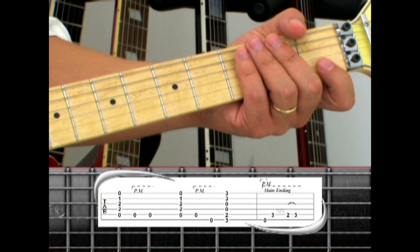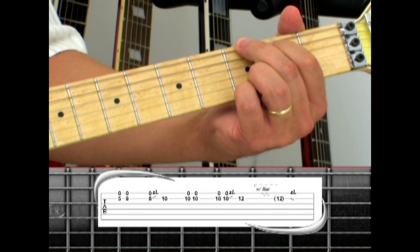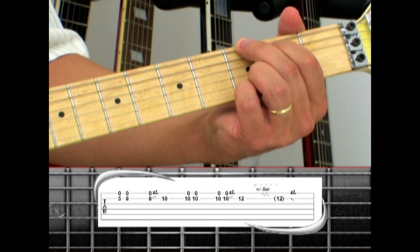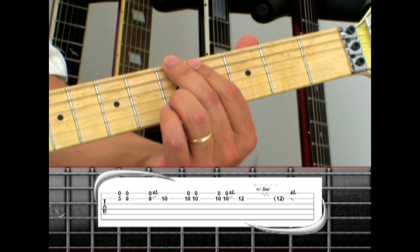After another verse and chorus coming out of the G chord, Eddie starts the first guitar solo on the second string, fifth fret, played with a drone note on the first string open.